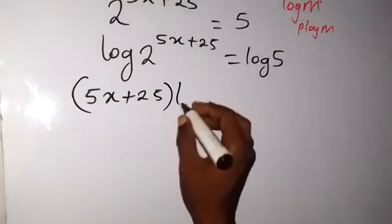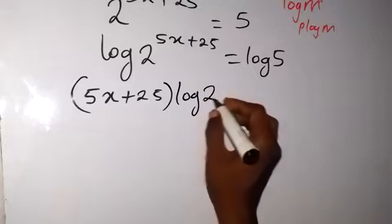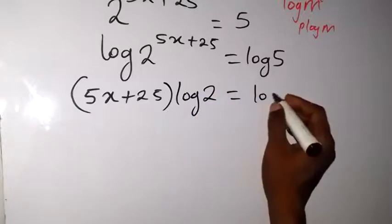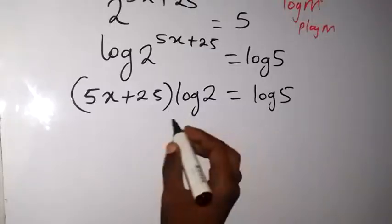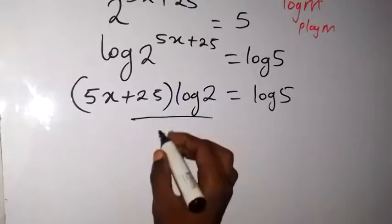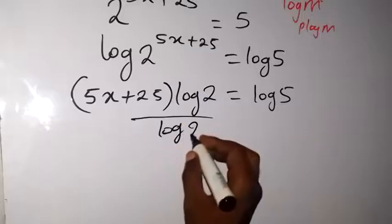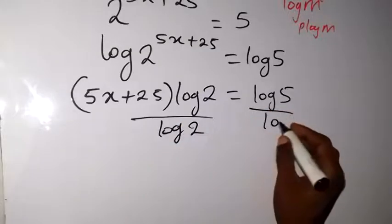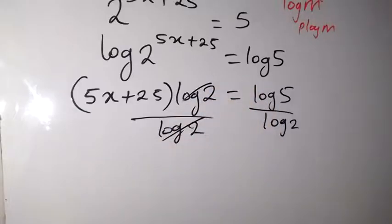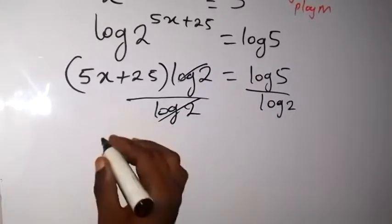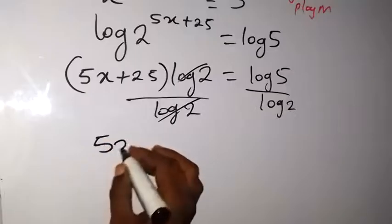Multiply by log 2, then equals to log 5. Since we are finding the value of x, we can divide both sides by log 2. So when we divide both sides by log 2, log 2 cancels log 2 on this side.